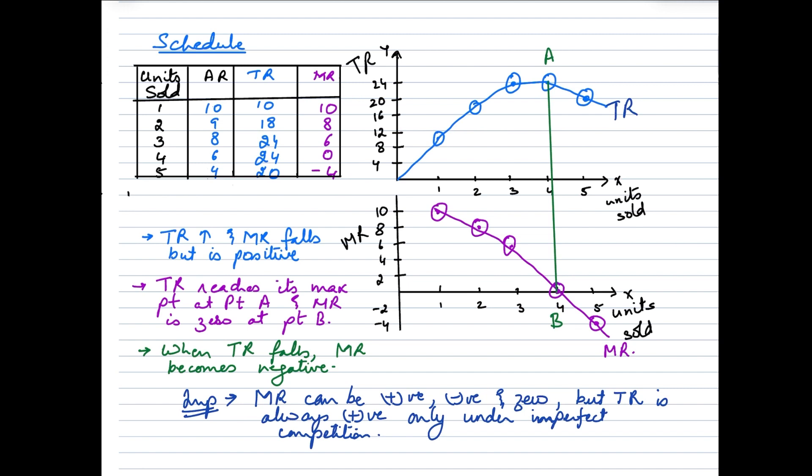Now when we take a look at the figures under the total revenue column, we see that the total revenue is rising, then it becomes constant, and then it begins to fall. Marginal revenue on the other hand is falling right from the beginning. When these numbers are plotted on the graph, this is how the total revenue curve would look like and marginal revenue curve would look like. Now in this particular diagram we have two panels, panel one and panel two. So in the first panel we are only talking about total revenue and in the second panel we are talking about marginal revenue.